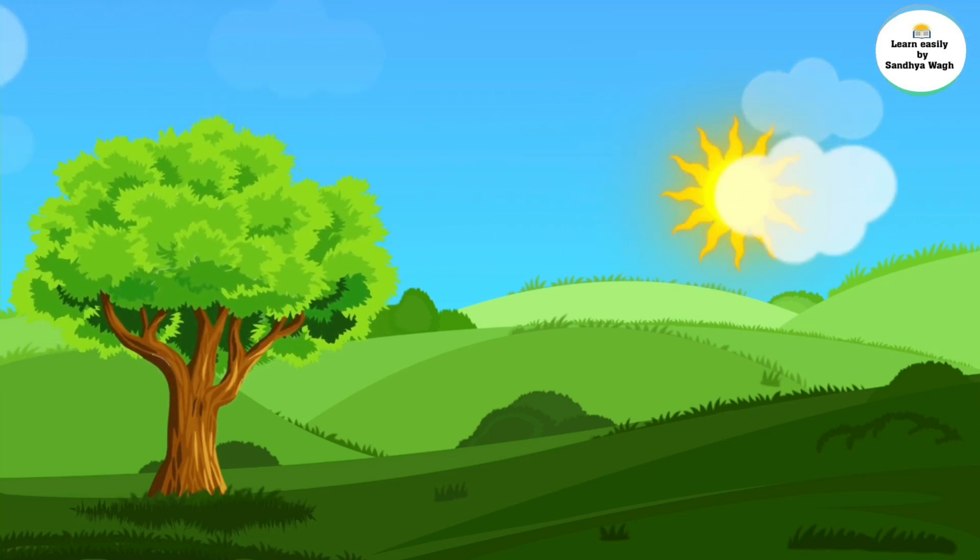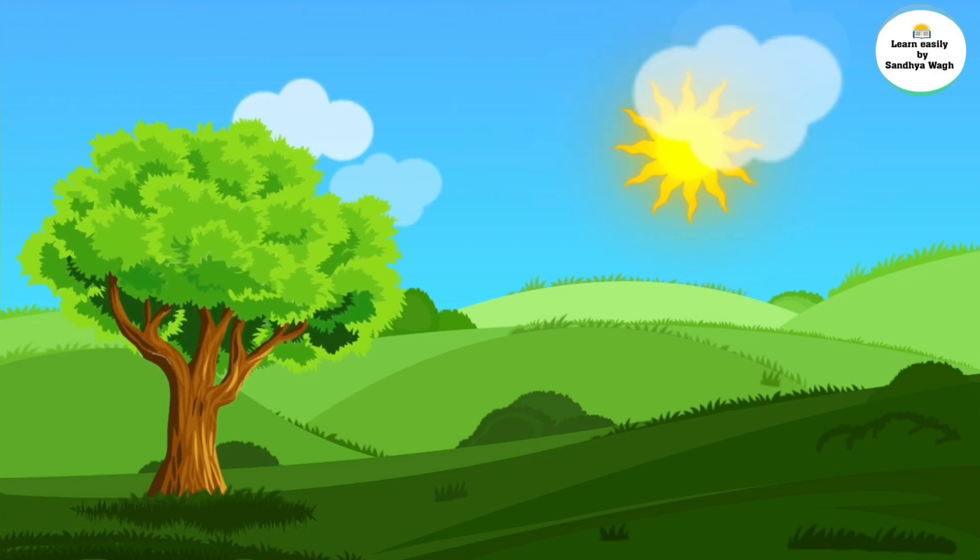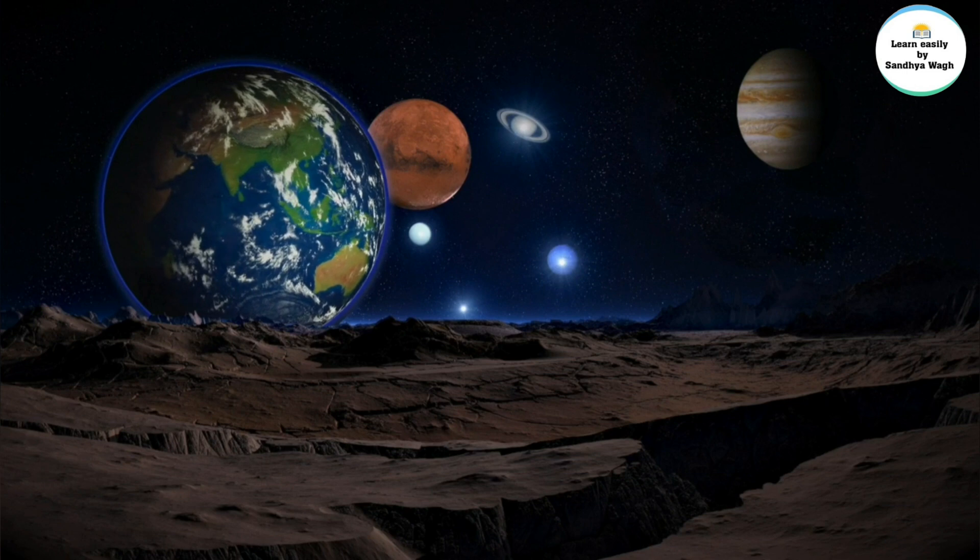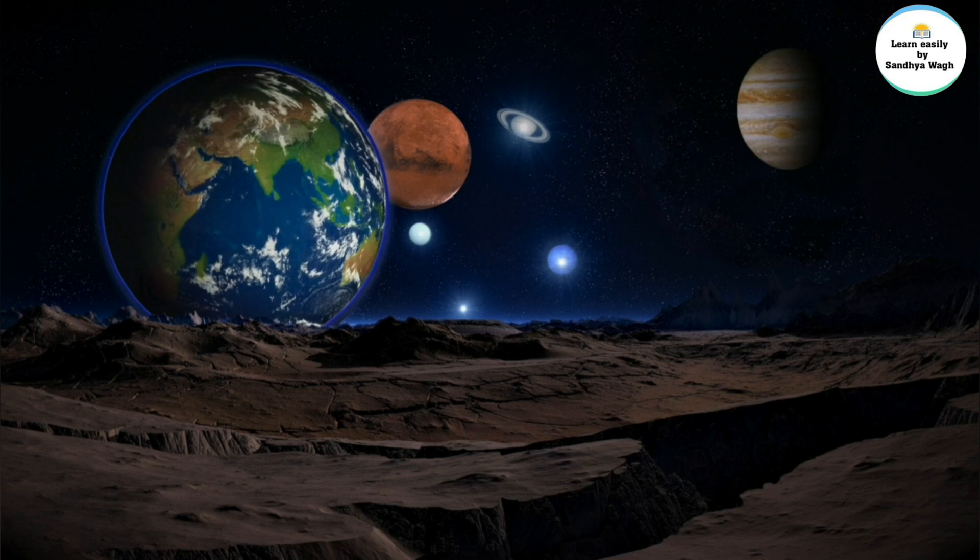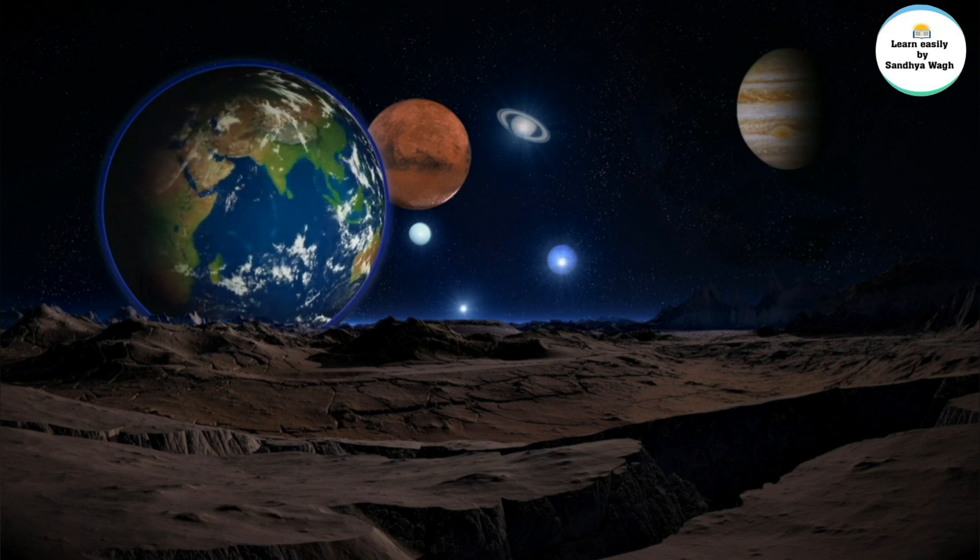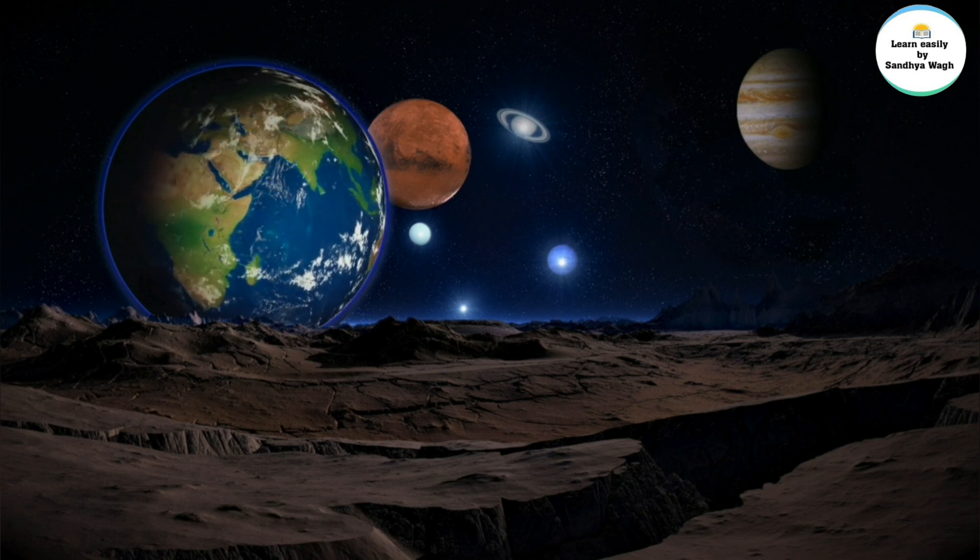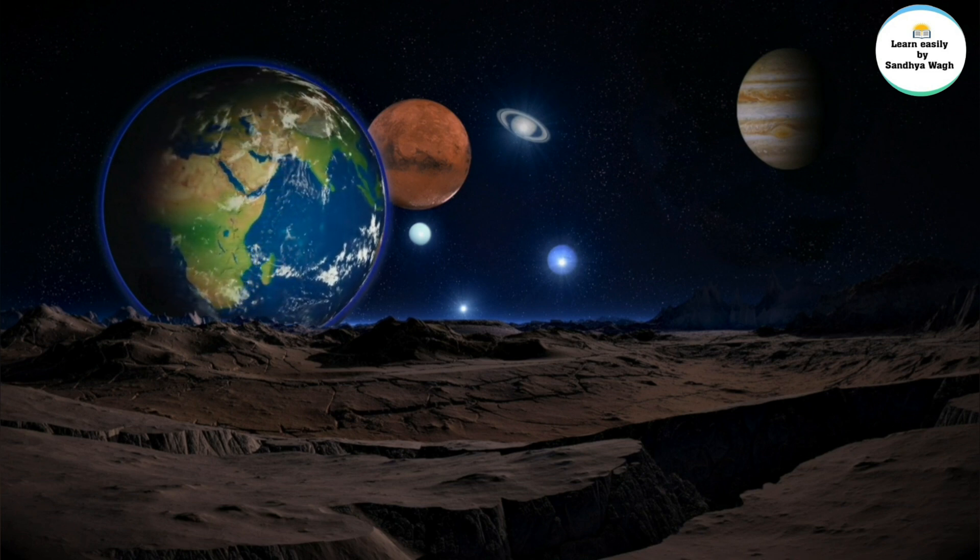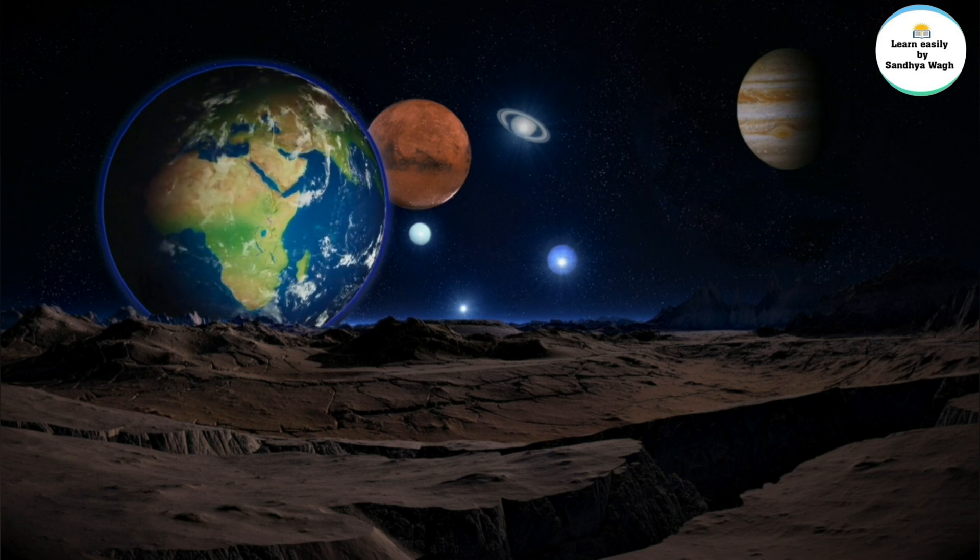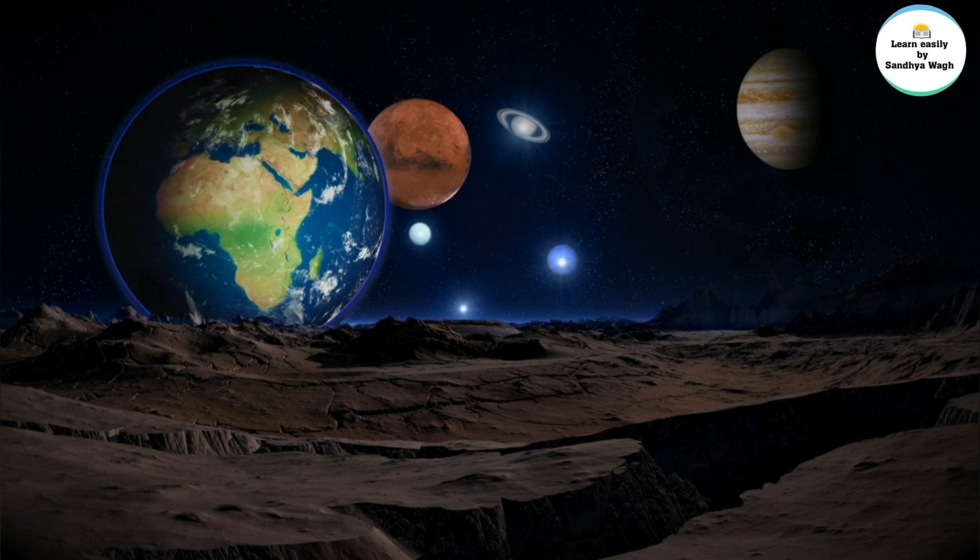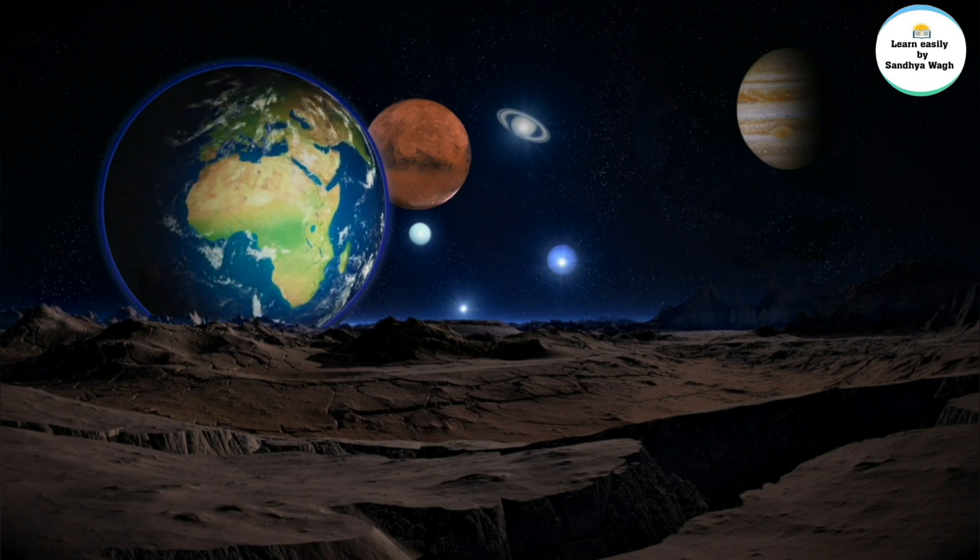Students, just imagine what will happen to our solar system if the sun will suddenly disappear. There will be darkness everywhere. The cycle of day and night would come to halt. All the plants will die as they will not be able to perform photosynthesis.